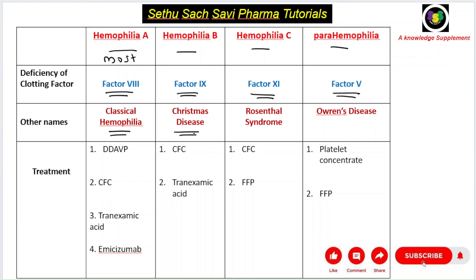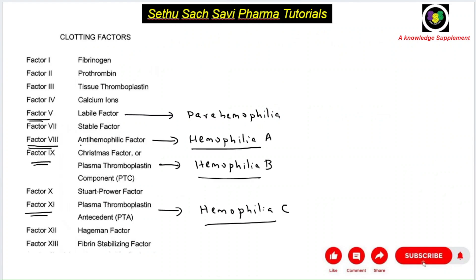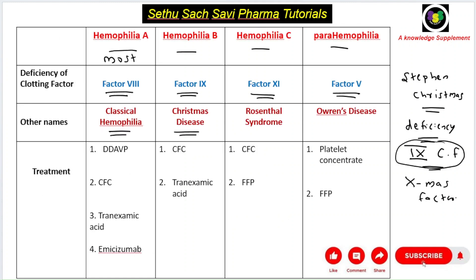Hemophilia B is called Christmas disease. It has no relationship with Christmas Day — it is named after the first identified hemophilia patient, a Canadian child called Stephen Christmas. This five-year-old boy was detected with a deficiency of clotting factor 9 and had uncontrolled bleeding. In his name, clotting factor 9 was named the Christmas factor.